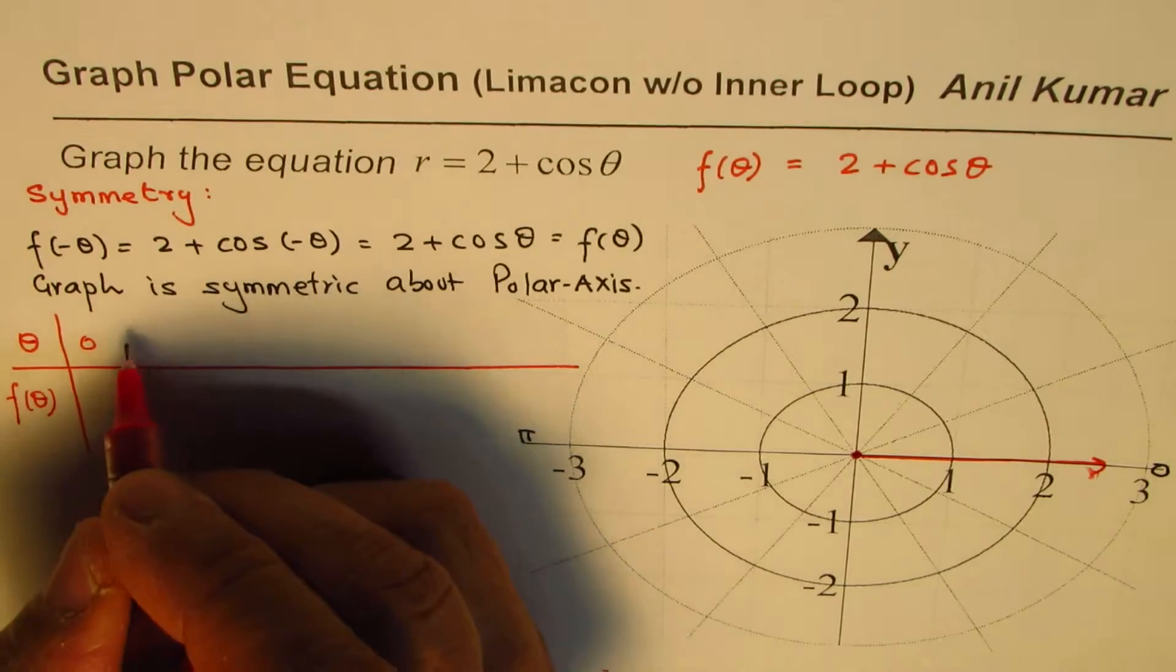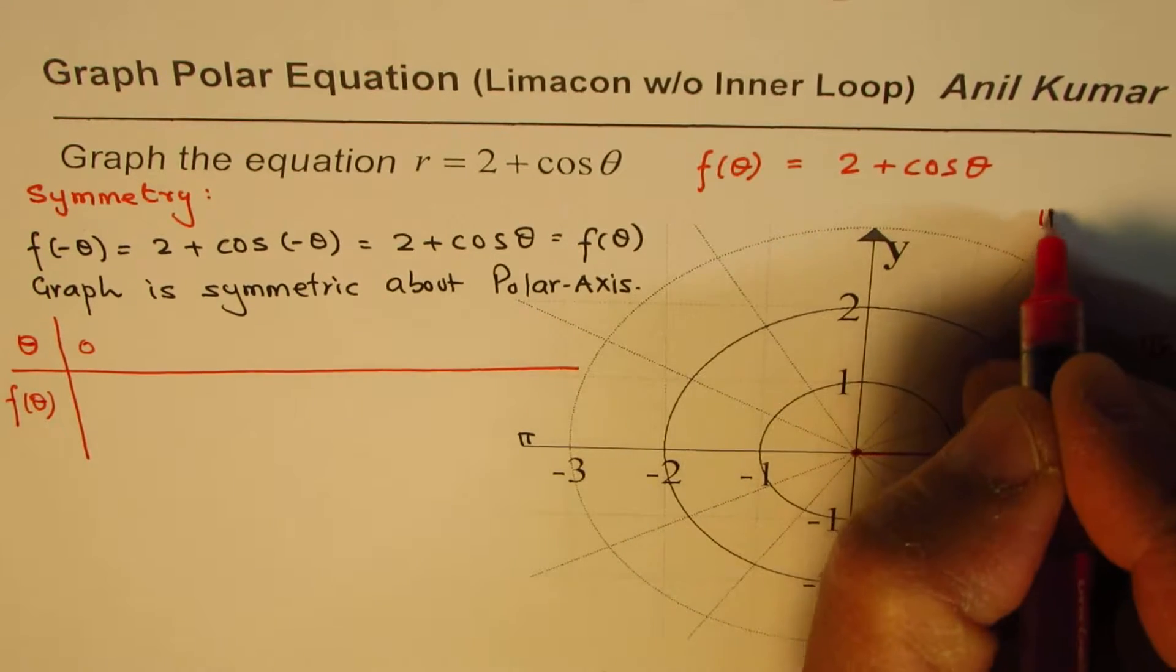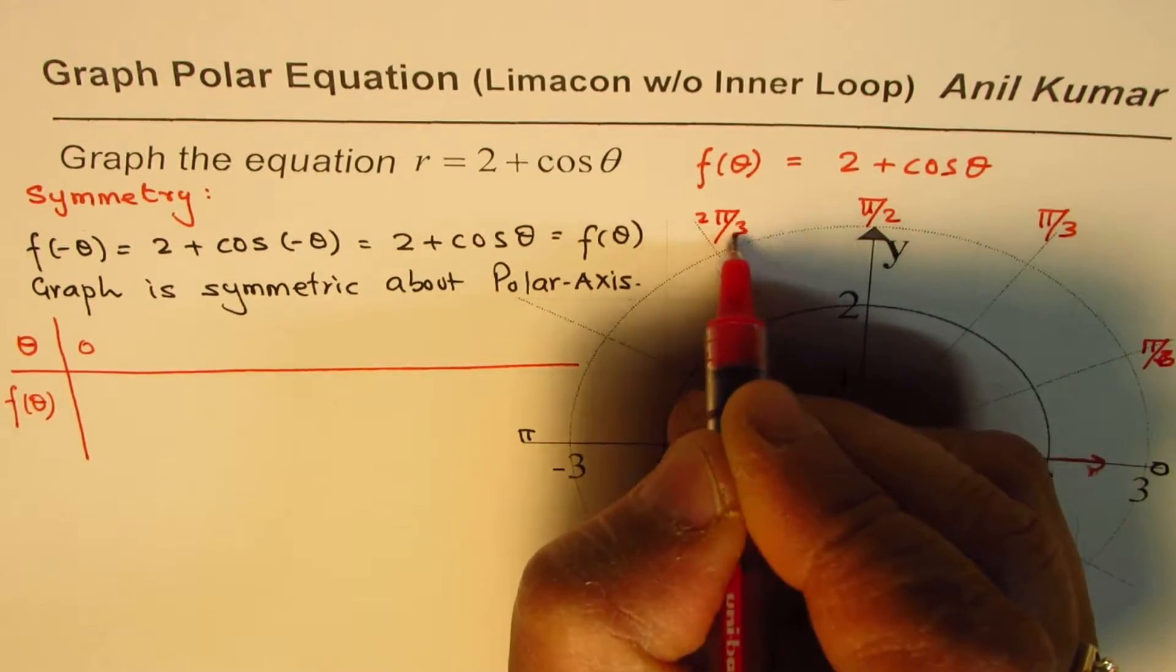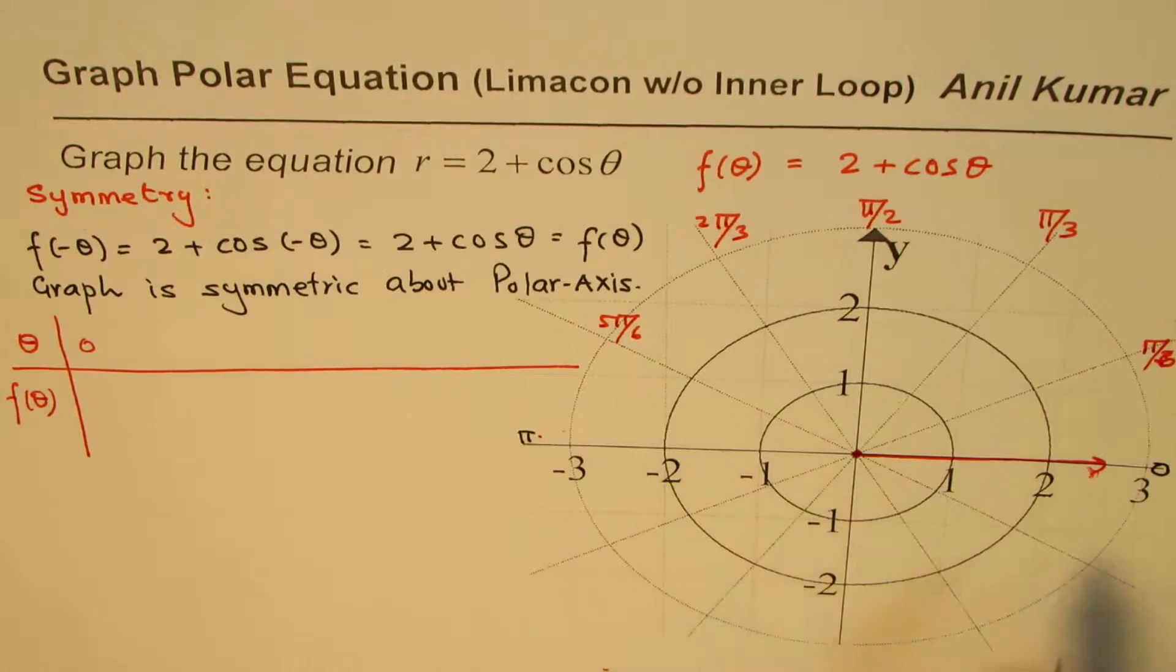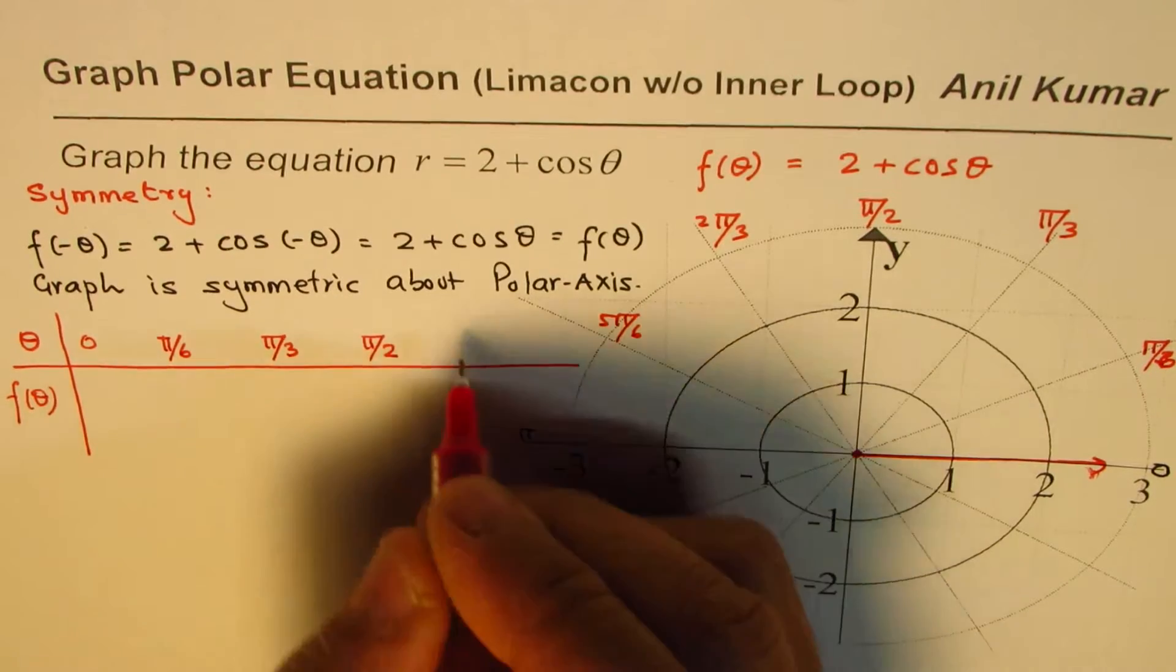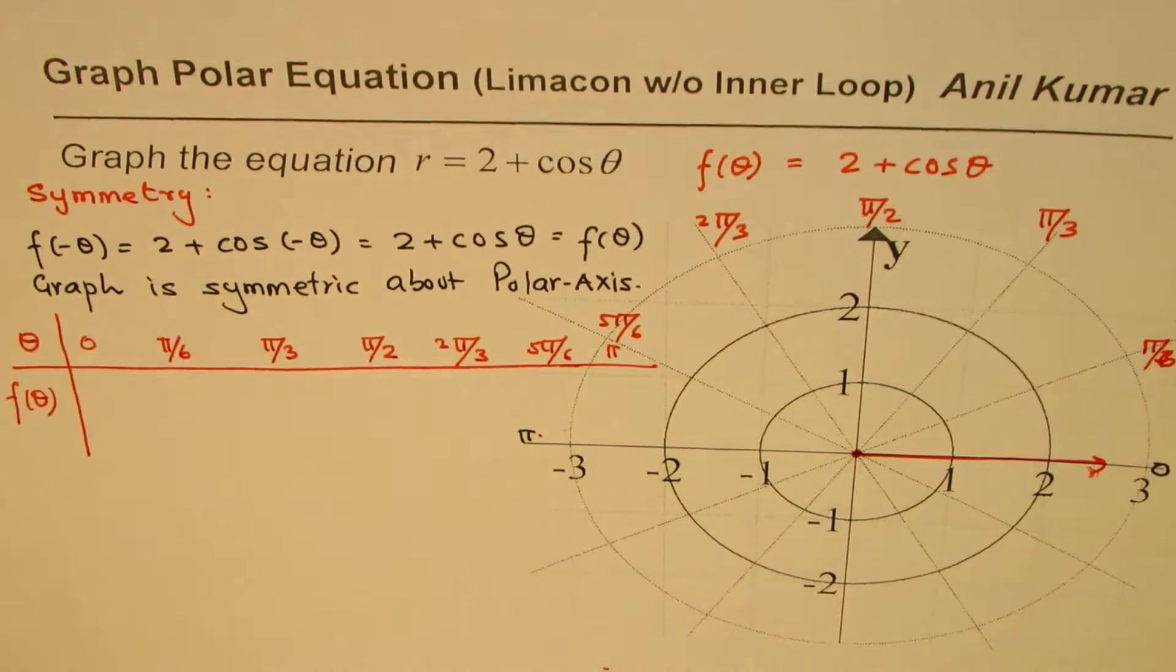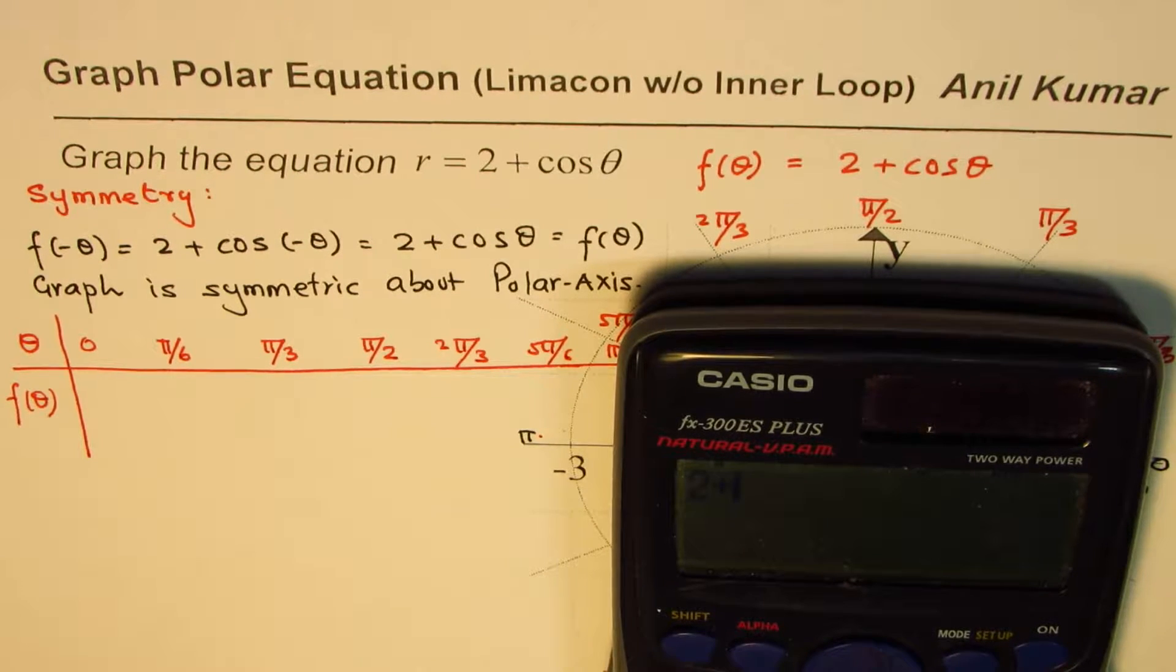We'll start with 0, take few values, calculate using calculator. So here I have π by 6, this is π by 3, this is π by 2. So this is 2π by 3, 5π by 6, and this is π for us. So let's take these values, plot them, and see what do we get. So we have 0, π by 6, π by 3, π by 2, 2π by 3, 5π by 6, and π. We'll take these values, calculate, and then plot.